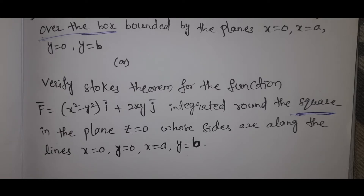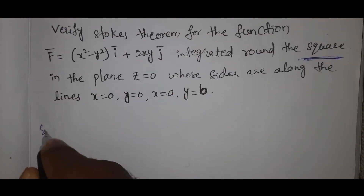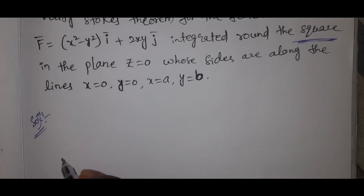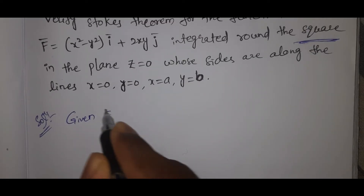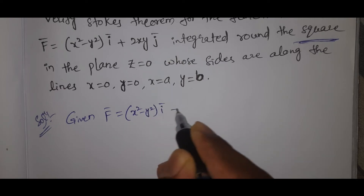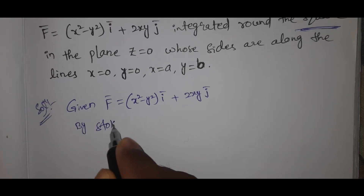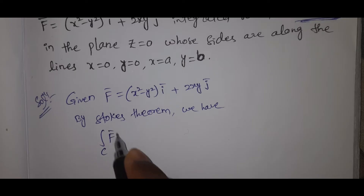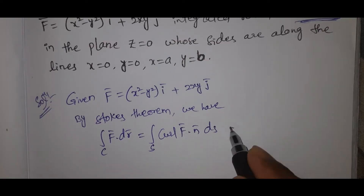Line integral and surface integral. Solution: the outward n̄ is equal to positive direction k̄. By Stokes theorem we have: integral over C of F̄ · dr̄ = integral over S of curl F̄ · n̄ dS. This is equation number 1. Now first we compute the RHS.